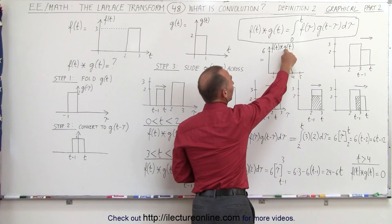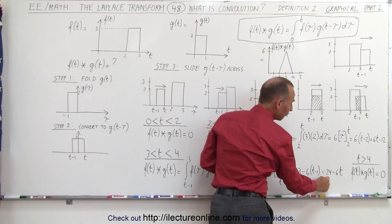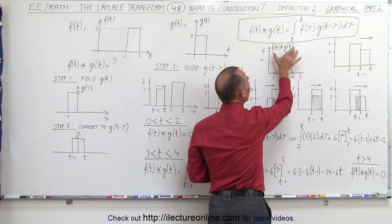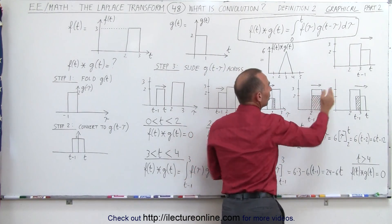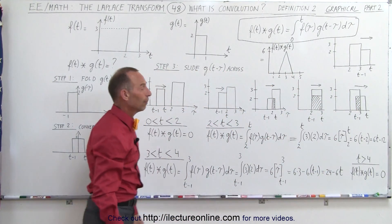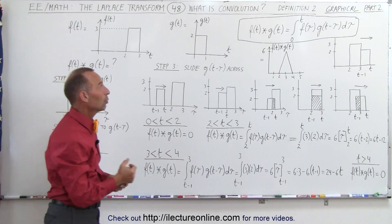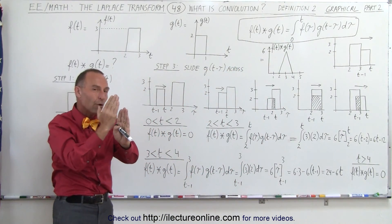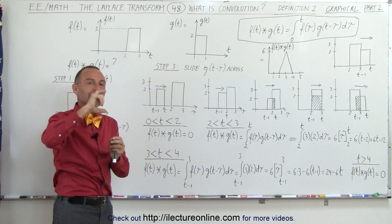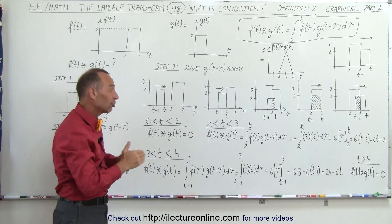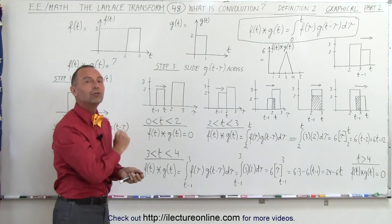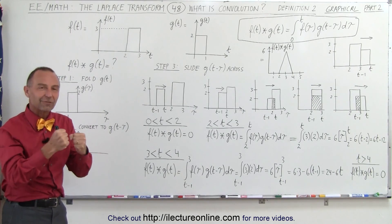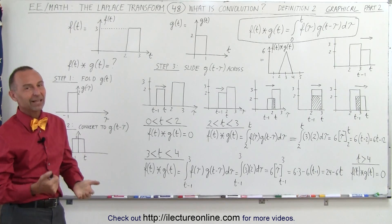When t equals 3, 24 minus 6 times 3 equals 6, so the convolution value is 6. When t equals 4, 24 minus 24 is 0, so it comes back down to zero. Past 4, the functions are no longer overlapping and the value is zero. This shows the relationship between the mathematical definition of convolution and the graphical approach — the height of the first times the height of the second times the amount of overlap equals the convolution. We hope you now have a good understanding, and we'll do a few more examples to solidify it in the videos to come.